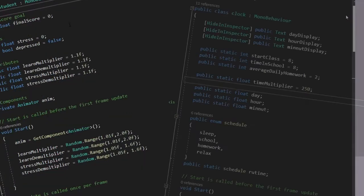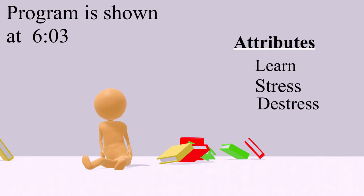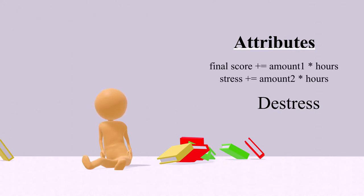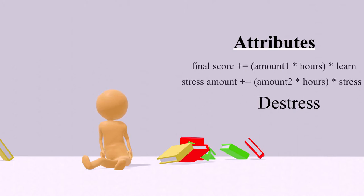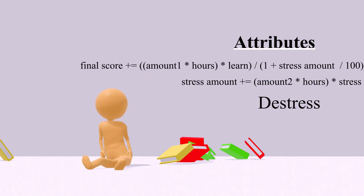Now I won't bore you to death with my terribly written code. However, I will show you the quite simple math involved to give you an understanding of how all of this is working. Whenever the students go to school, they gain a certain amount of final score and stress for each hour they spend in school. These values are then multiplied with their attributes, so for example a student might have a learning ability of 1.5, meaning that the student will learn 50% quicker than others. The same goes for stress. The gain in final score will also depend on the amount of stress each student has.